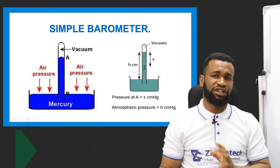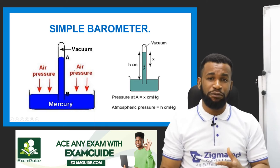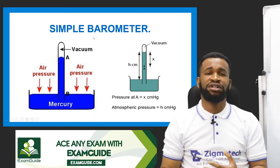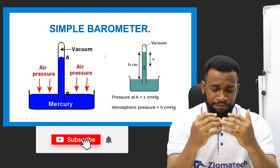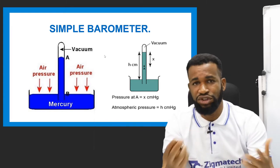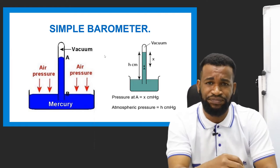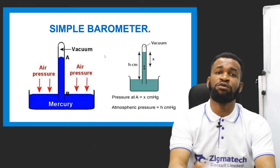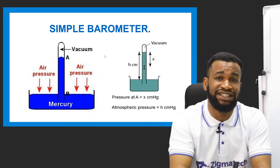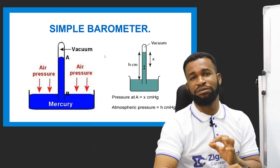The first thing we want to talk about is the simple barometer. The simple barometer is an instrument used to measure atmospheric pressure, because atmospheric pressure may not be constant — it changes because the weather, the climate, and other factors can cause it to change. There is a standard atmospheric pressure which is given as 76 cm of mercury, or 760 mm of mercury.